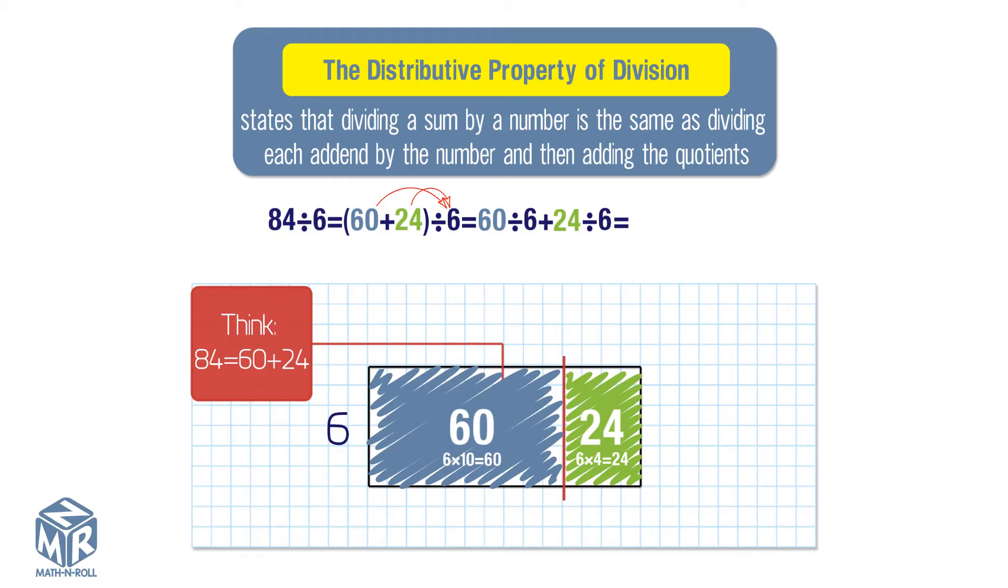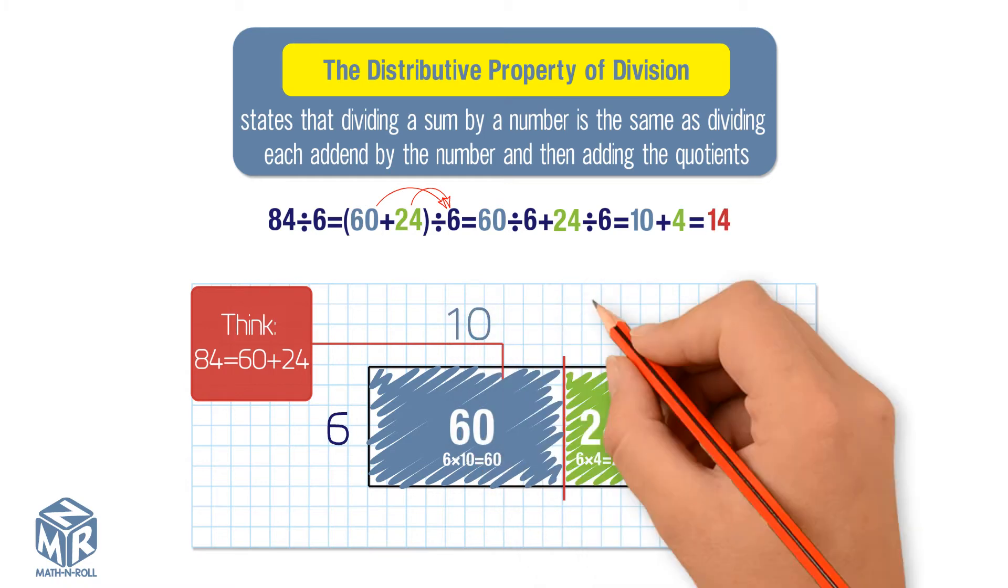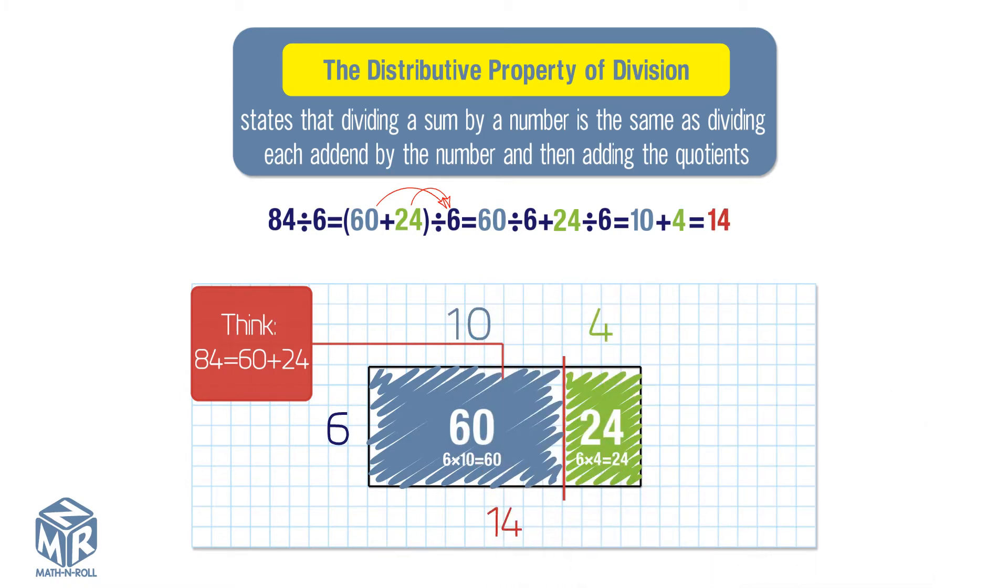Add the partial quotients. 10 plus 4 equals 14. So 84 divided by 6 is 14.